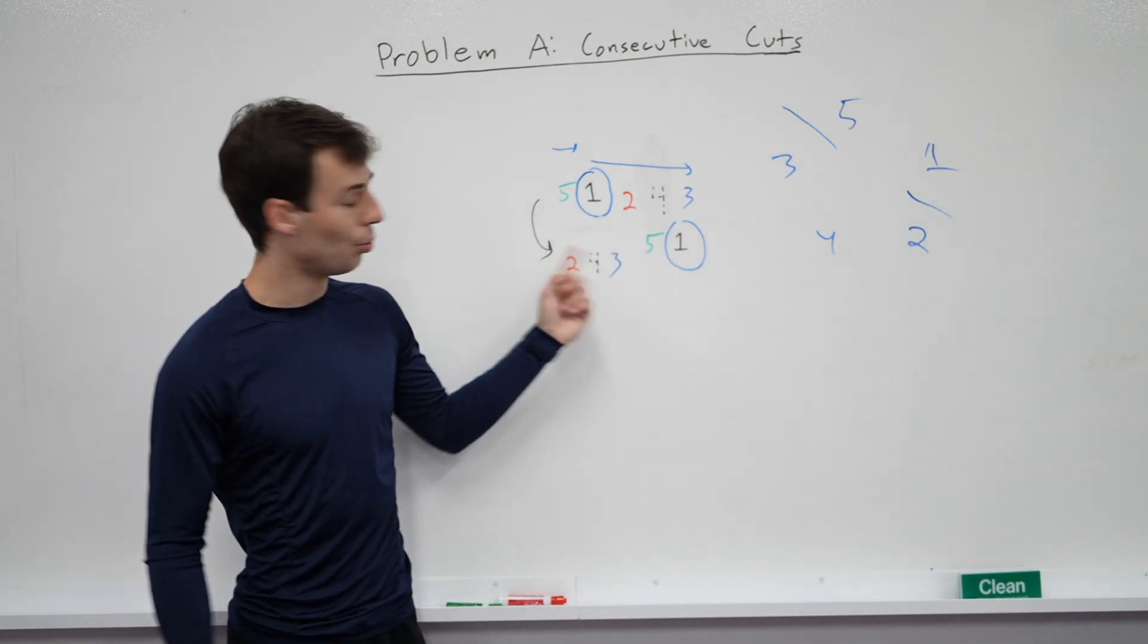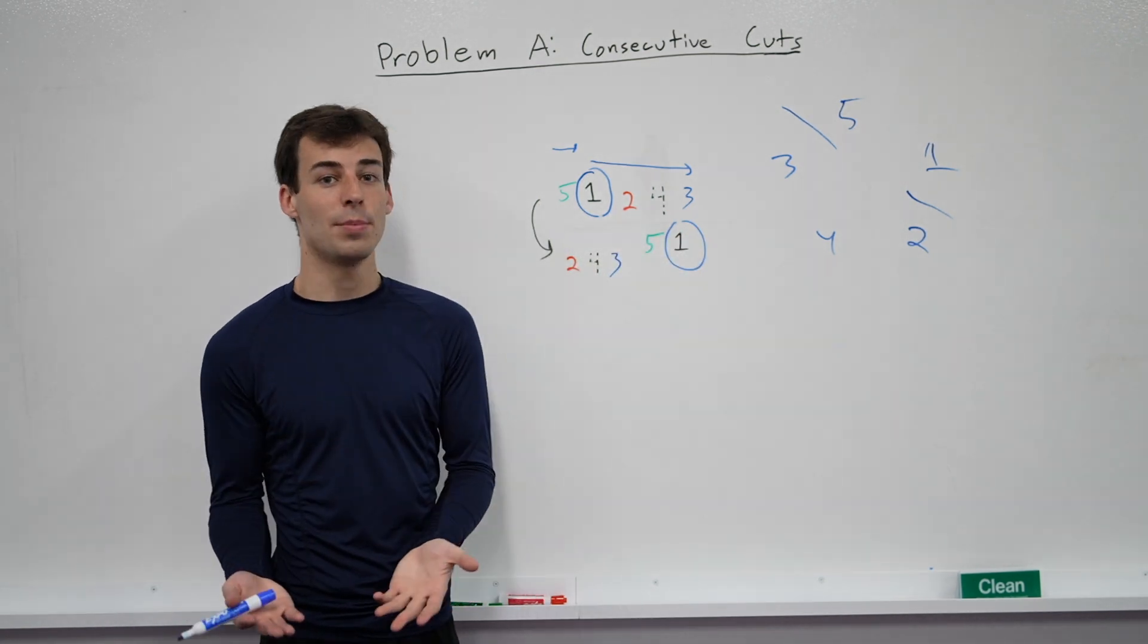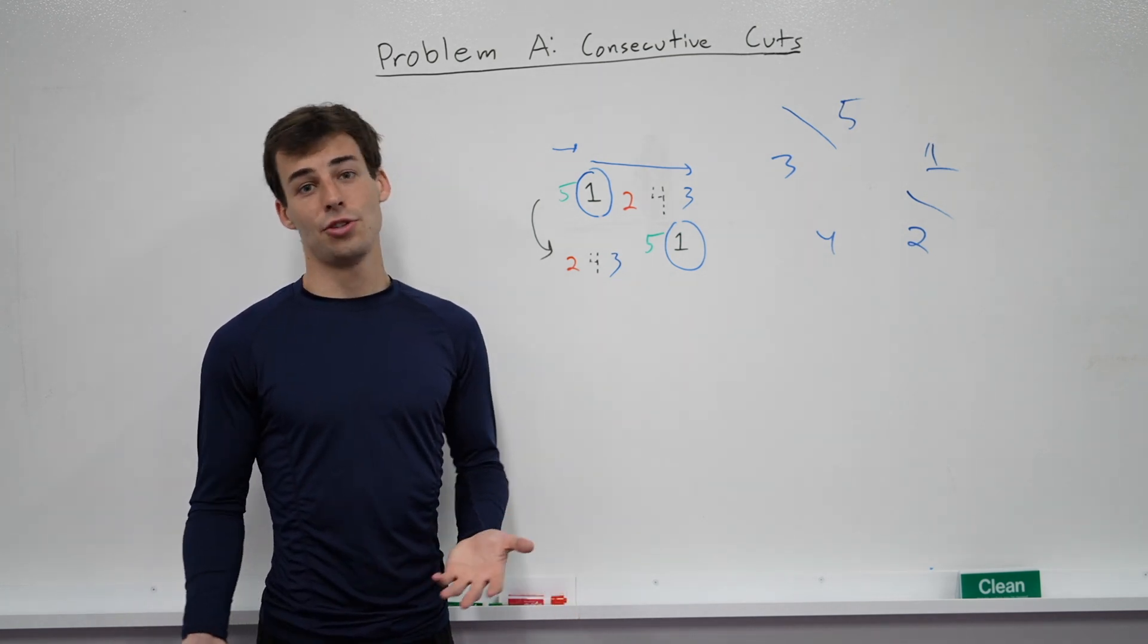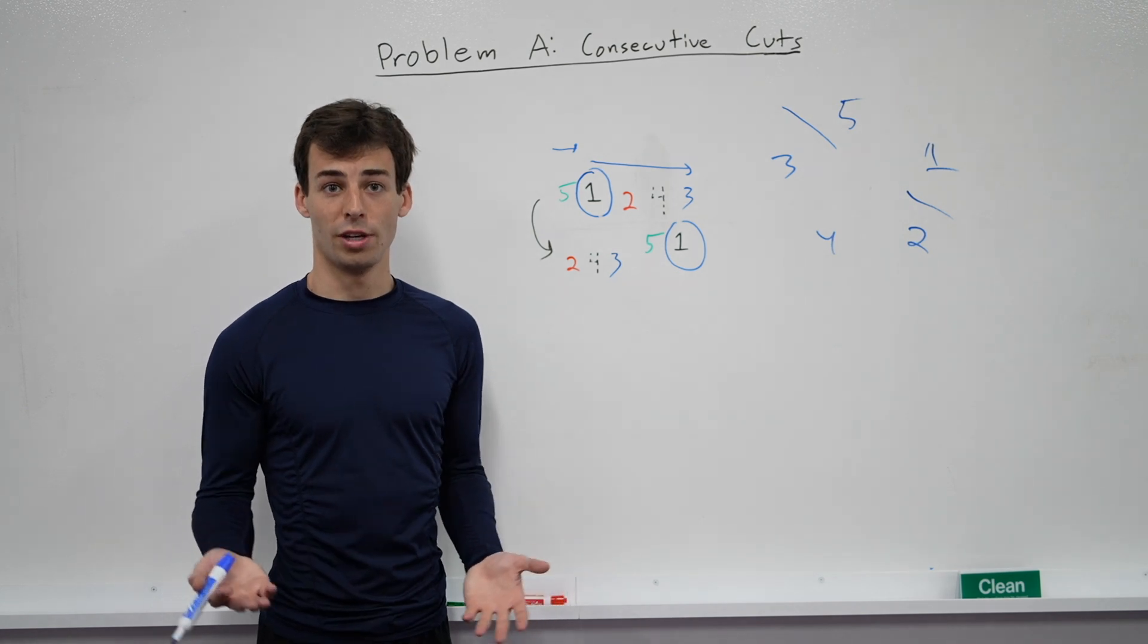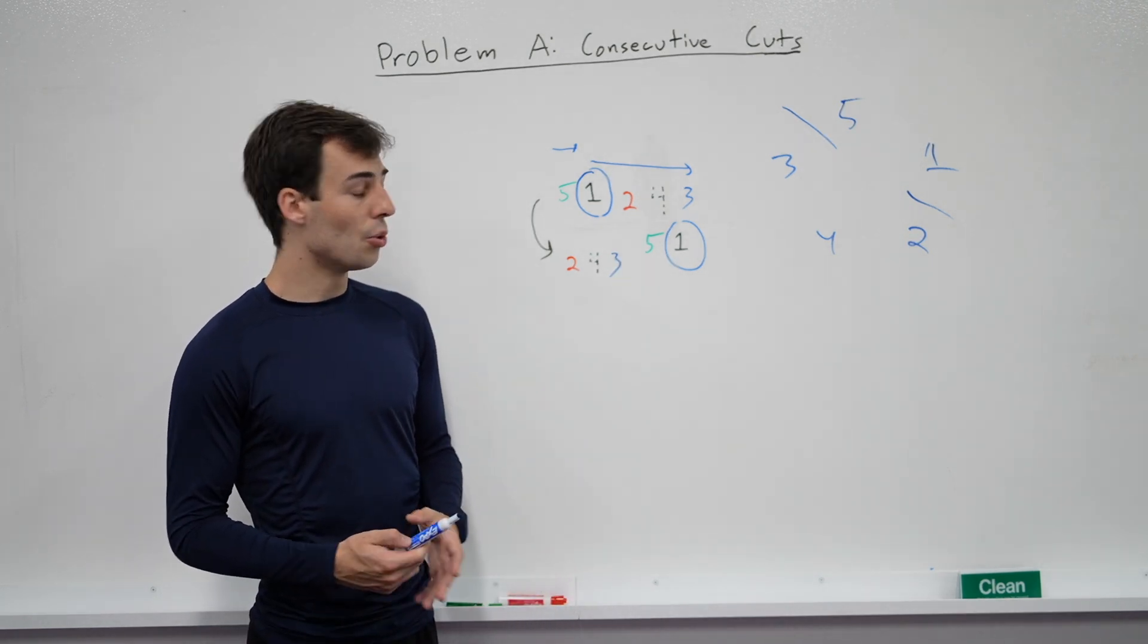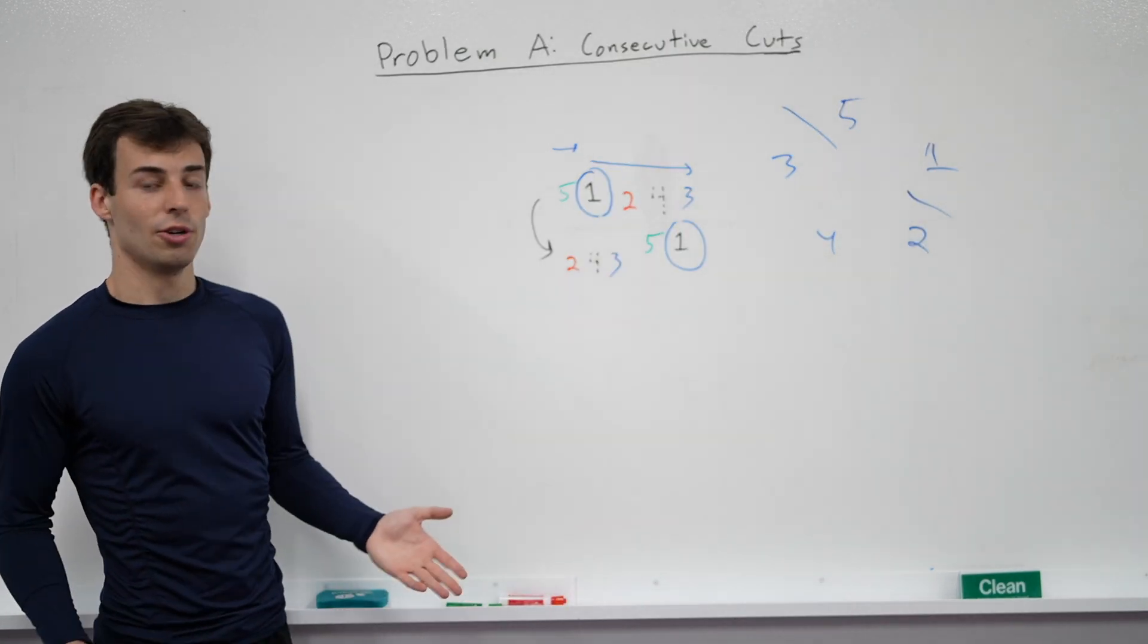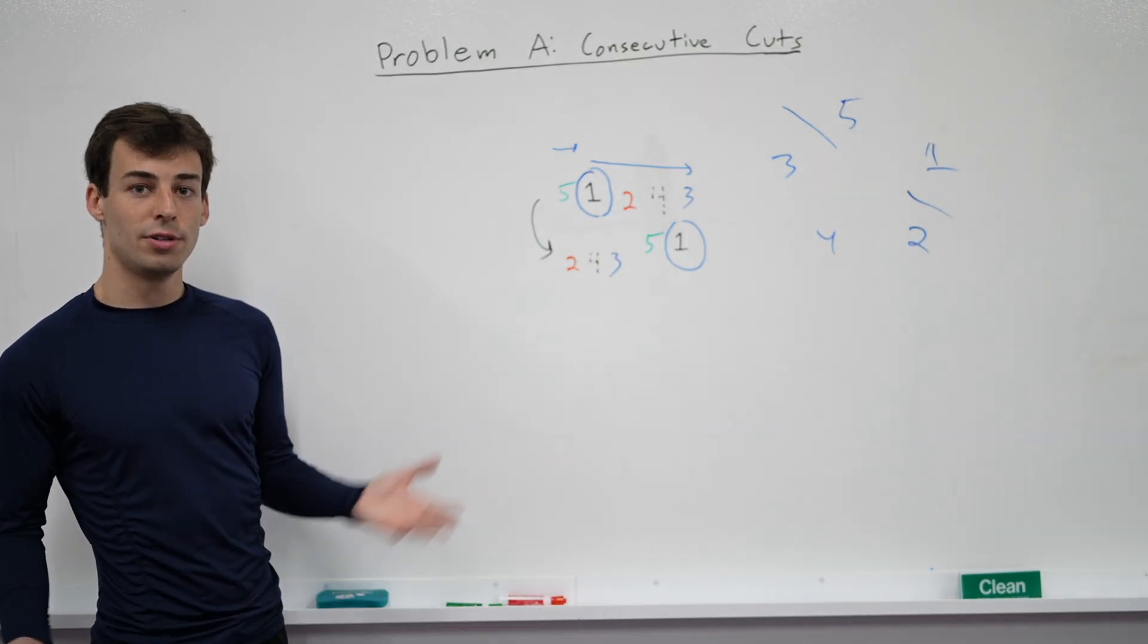But obviously, the check to see if one works takes a linear number of steps. So if we do this naively, our code would be n squared, and n is too big for this to be something that would run in the amount of time required. So we're going to need something more advanced.